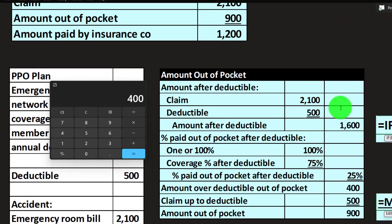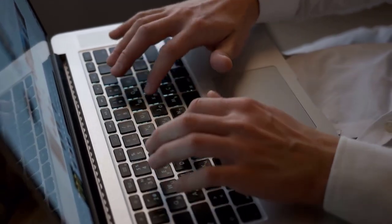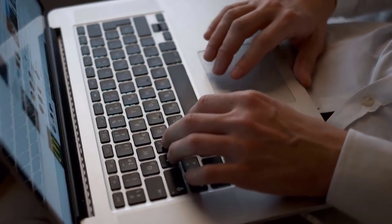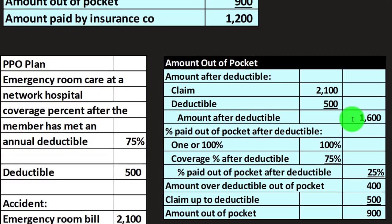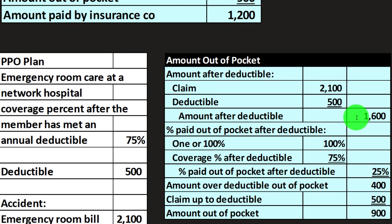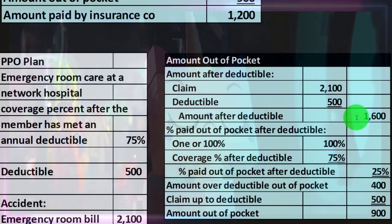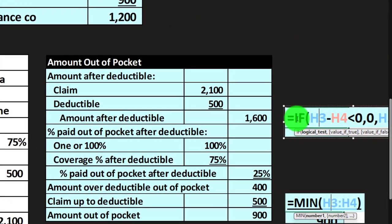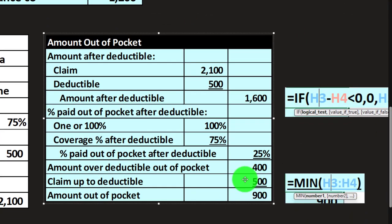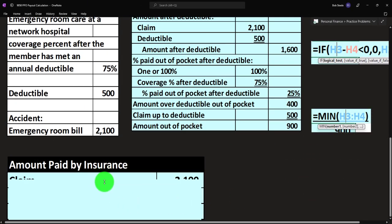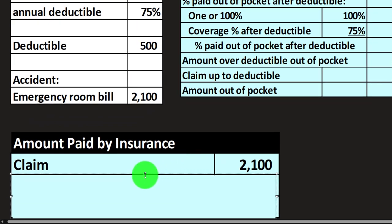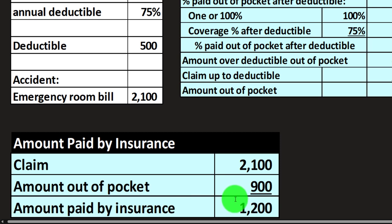If you put this table into Excel, again you'd want an IF or logic function — if the claim dropped below $500, we don't want this to go negative; we're staying positive here. You can use a logic function to cap it, and also take the lesser of the claim or the deductible. Good practice in Excel. Finally, we calculate the insurance company's portion: $2,100 minus the $900 we paid out of pocket = $1,200, and $1,200 plus $900 confirms the $2,100 claim total.